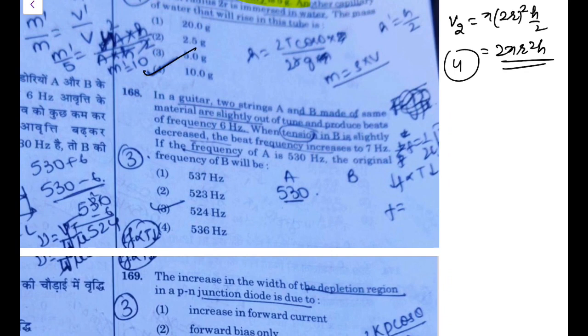In a guitar, 2 strings are made of the same material, are slightly out of tune, and produce beats of frequency 6. When tension in B is slightly decreased, the beat frequency increases to 7. That means if we increase the tension, the frequency of B will decrease, and that beat frequency is increasing. That means B is the lower one and A is the higher one.